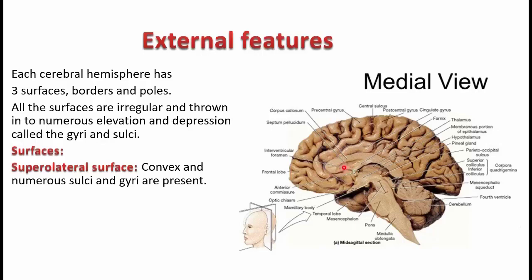Deep to the septum pellucidum you see the cavity of the lateral ventricle. The lateral ventricle is somewhat C-shaped and extends into the frontal, parietal, and also some extent posteriorly to the occipital and also the temporal lobe, because it is a primitive cavity and all these lobes are actually developed around it. This band of white matter is the fornix, which is a part of the limbic system.